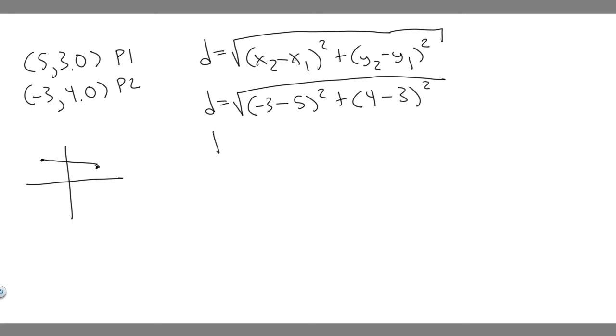So if you go ahead and do this, D is going to equal the square root... -3 minus 5 is -8. -8 squared is just 64. We'll just write it in the next step, but 4 minus 3 is just 1, so 1 squared.